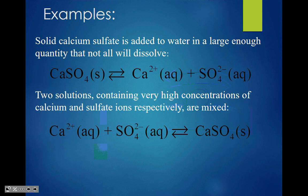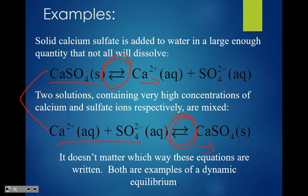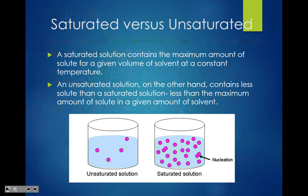Here's an example: solid calcium sulfate is added to water in a large enough quantity that not all will dissolve — it's saturated. We can write the equation in two ways, and they mean the same thing. Two solutions containing high concentrations of calcium and sulfate ions mixed together can either be described as dissolving or crystallizing. Because of the double arrows, crystallizing and dissolving are happening at the same time and at the same rate — both expressions are at dynamic equilibrium.